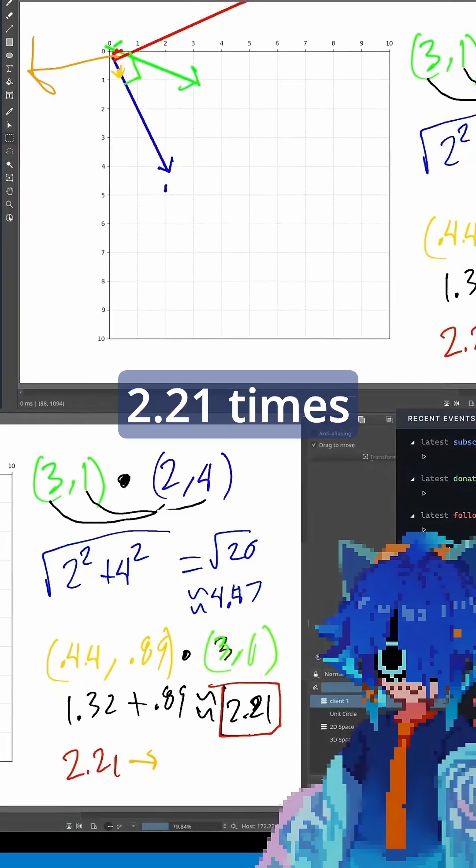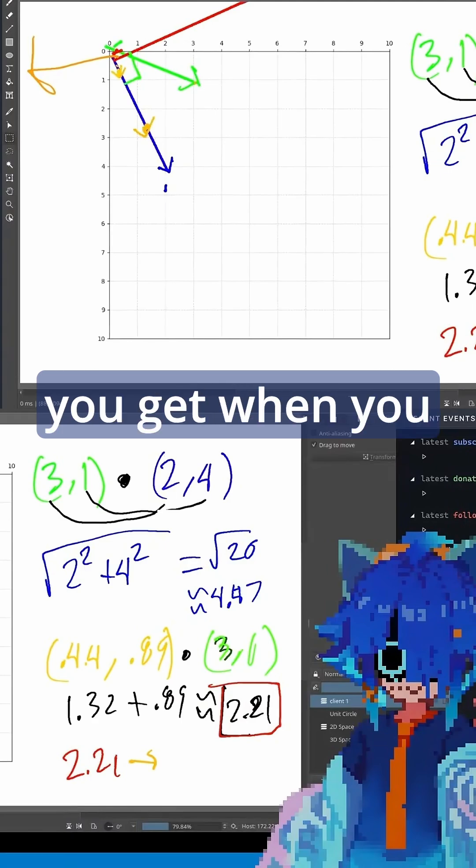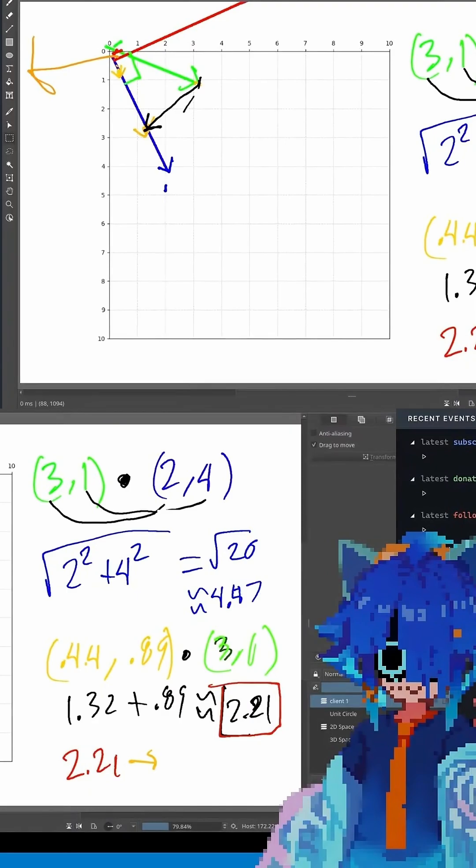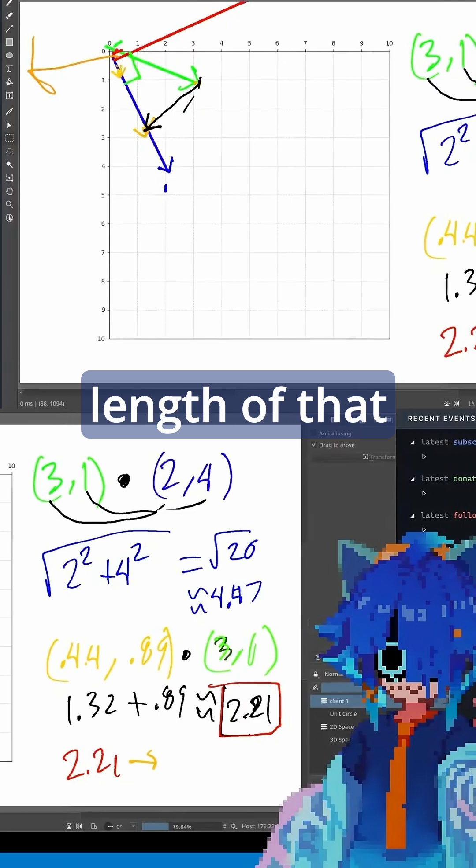If we make it 2.21 times longer, it turns out that that vector is what you get when you project the green vector onto the blue vector. So the dot product of a vector and a normal vector represents the length of that vector in the direction of the unit vector.